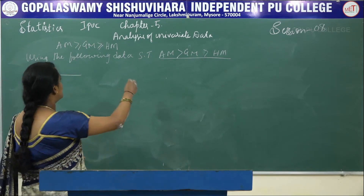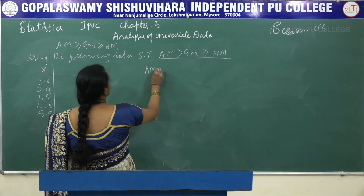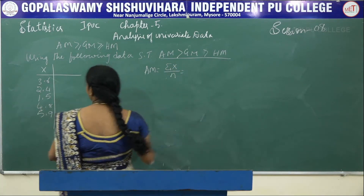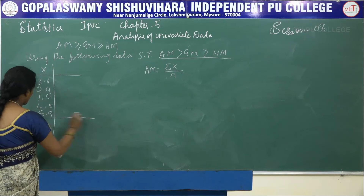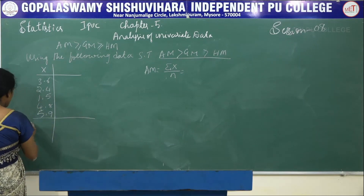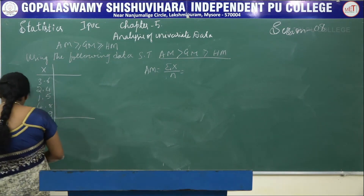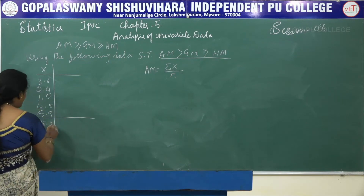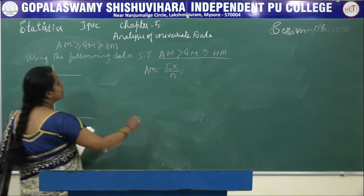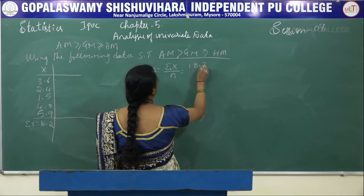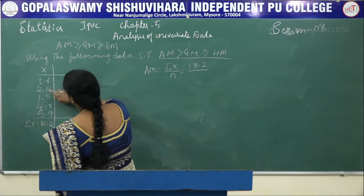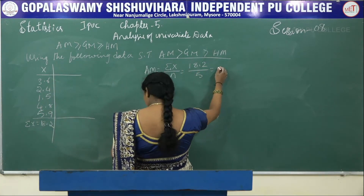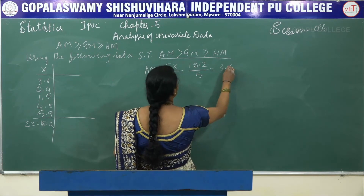First, we find AM. AM is equal to summation X divided by N. Summation X is equal to 18.2, so it is 18.2 divided by 5. AM value is 3.64.